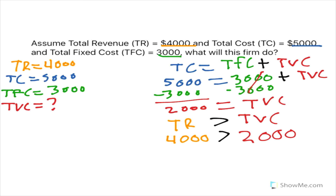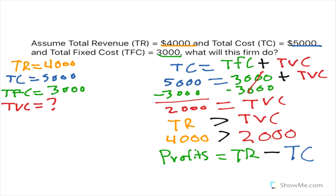They want to know what their profits are. Using the profits equation, total revenue minus total cost, we input the numbers: $4,000 minus $5,000 gives us negative $1,000. We tell this business that yes, they're able to stay in business, but in the short run they're going to lose out and potentially pay $1,000.